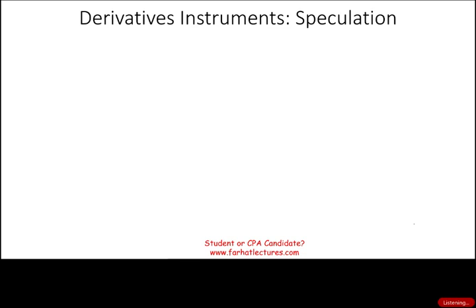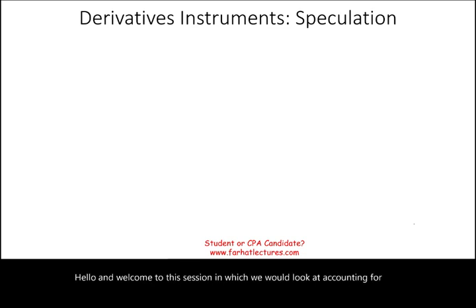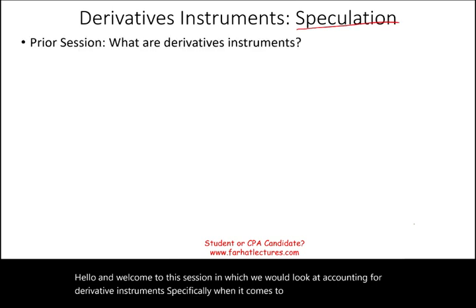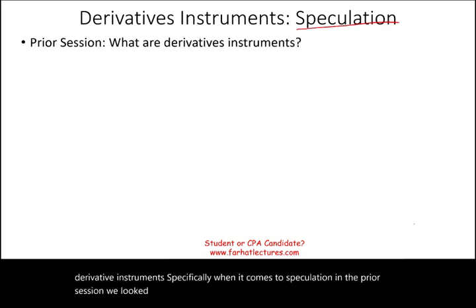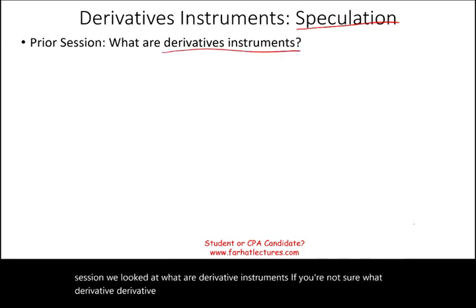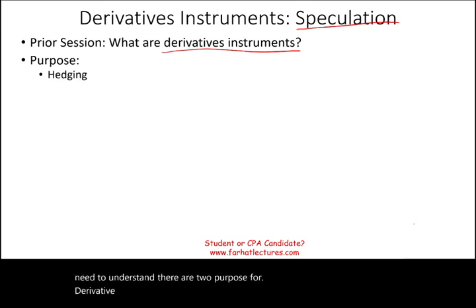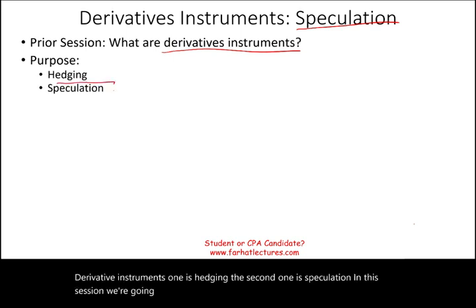Hello and welcome to this session in which we look at accounting for derivative instruments, specifically when it comes to speculation. In the prior session, we looked at what derivative instruments are — if you're not sure, please look at the prior recording. We need to understand there are two purposes for derivative instruments: one is hedging, the second is speculation. In this session, we're going to look at speculation, and we will work on hedging later on.